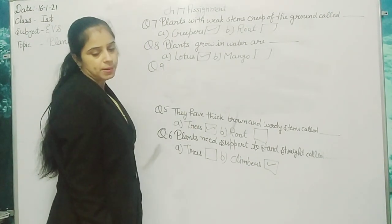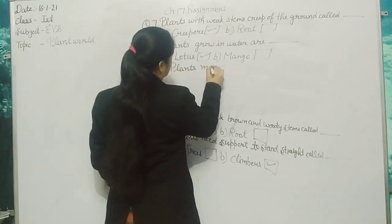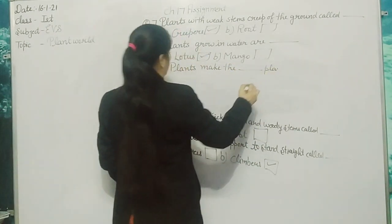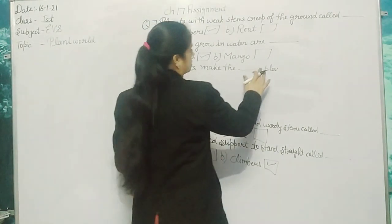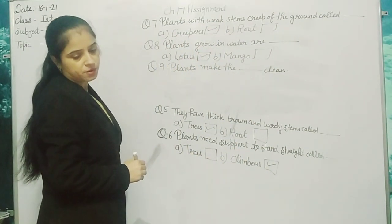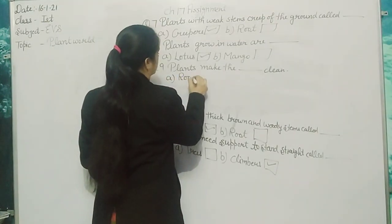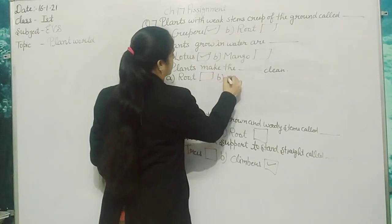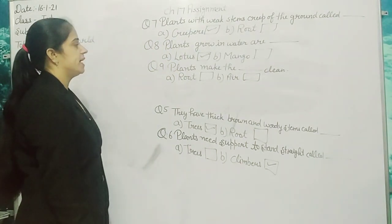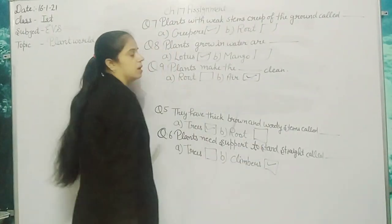Question 9: Plants make the dash clean — Option A: roots, Option B: air. Plants make the air clean. We will mark air.